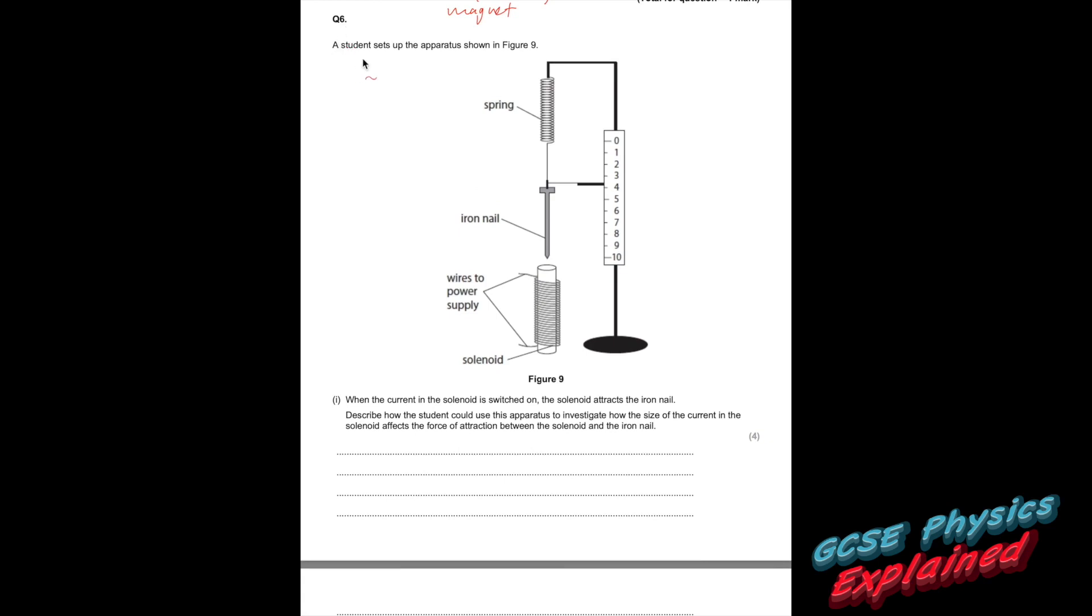Question 6. A student sets up the apparatus shown in figure 9. When the current in the solenoid, now that's just a posh word for a coil of wire, is switched on, the solenoid attracts the iron nail. Describe how the student could use this apparatus to investigate how the size of the current in the solenoid affects the force of attraction between the solenoid and the iron nail. Right, so basically, if you put a current into that coil, the coil's going to become magnetic, and it's going to attract the iron nail down. Now, the iron nail's connected to this pointer, which is on this scale.